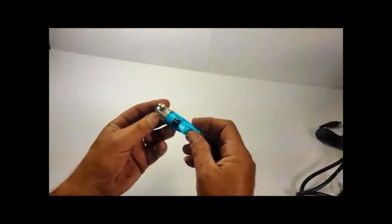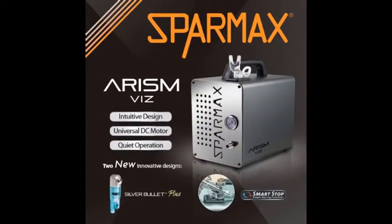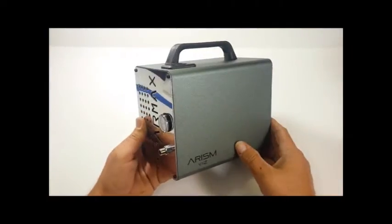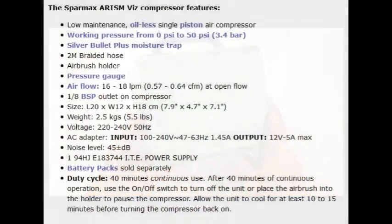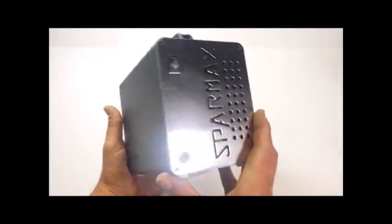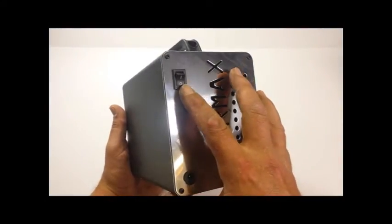After we get everything out of the box, the first thing you notice is the overall size of the unit. The Arism Viz is a compact compressor, measuring only 20 centimeters long by 18 centimeters high and a width of about 12 centimeters. The size is certainly an area SparMax has made an effort in reducing.